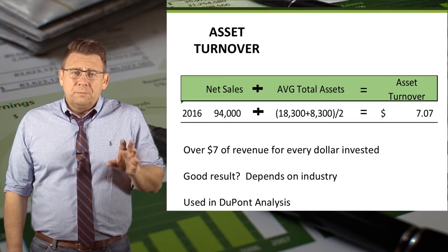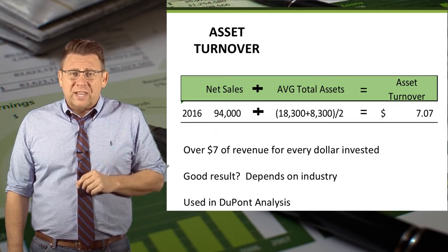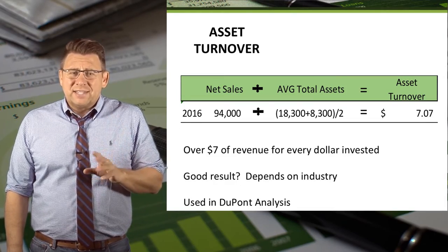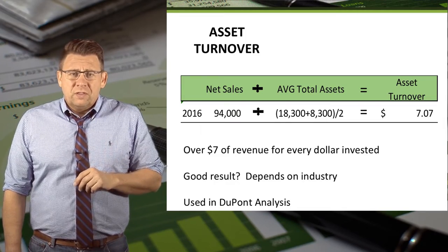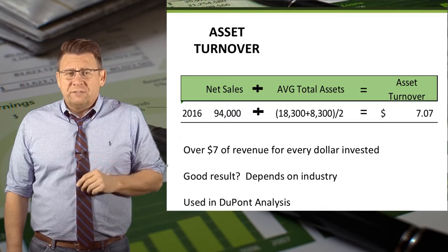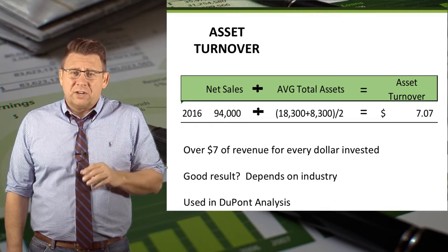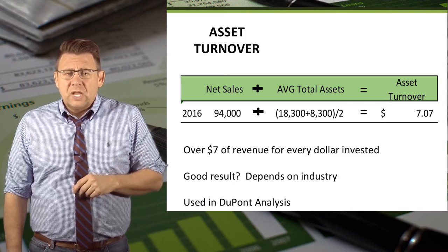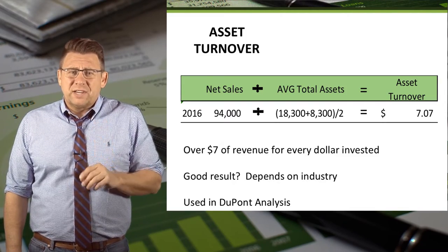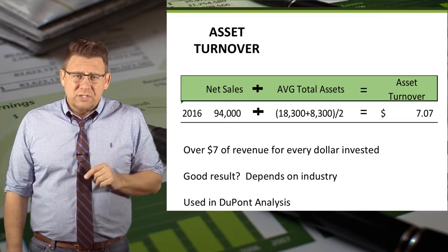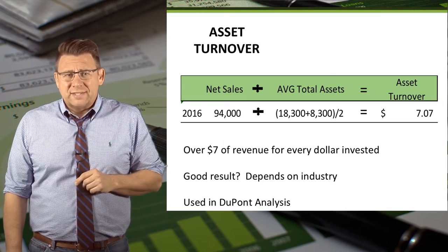So for 2016, net sales divided by average total assets gives us an asset turnover of 7.07. This means that for every $1 invested in assets, the company is generating over $7 of sales revenue. Sometimes this is expressed as times, meaning 7 times the amount of revenue as assets.